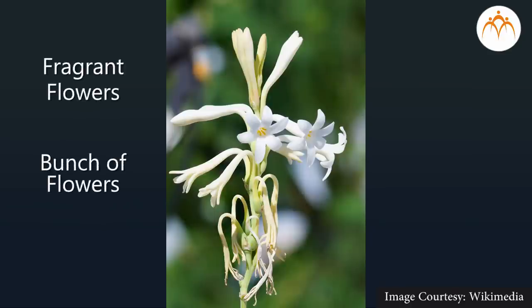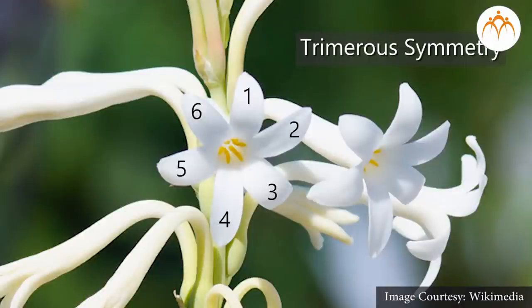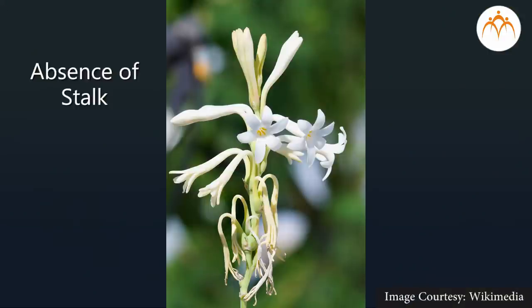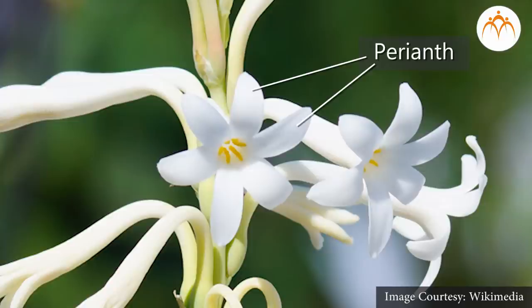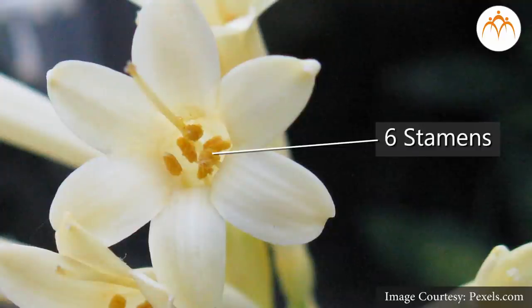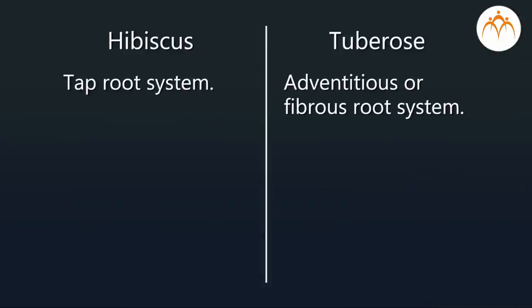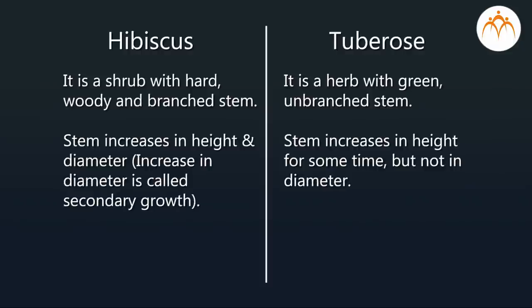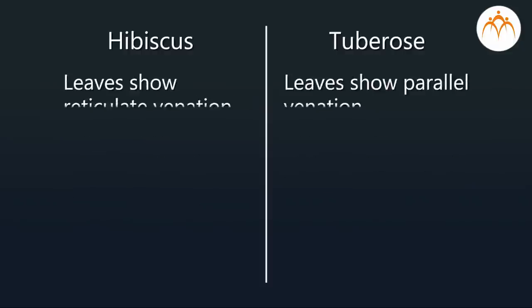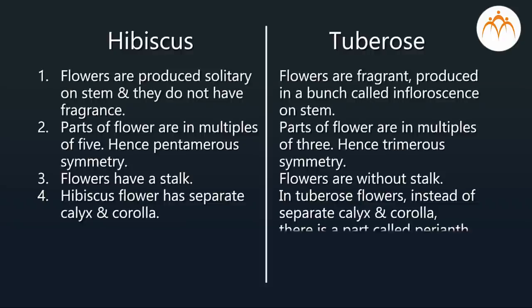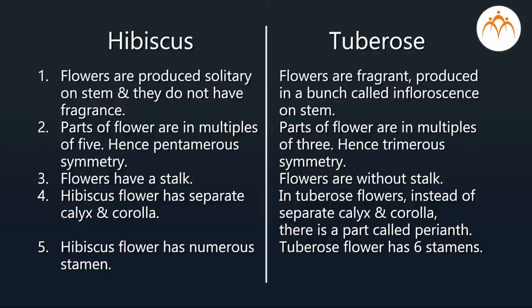Tuberose flowers are fragrant and produced in a bunch called an inflorescence on the stem. Parts of the flowers are in multiples of three, hence trimerous symmetry. Flowers are without a stalk. Instead of separate calyx and corolla, tuberose has a part called perianth, and tuberose flowers have six stamens. Students, you can study and compare any two plant specimens from dicotyledons and monocotyledons.